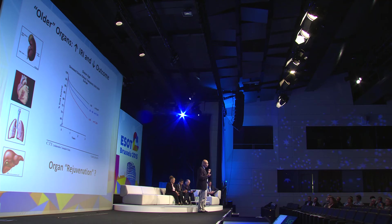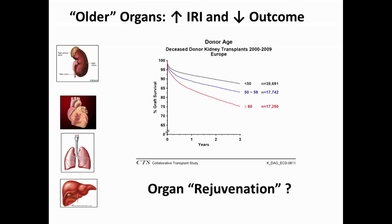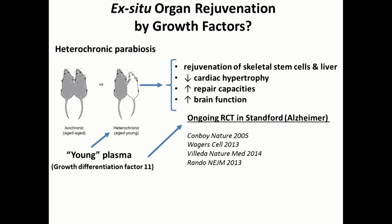For the last minute: all organs are more susceptible to ischemia-reperfusion injury and to a poor outcome with advancing age, and this is true for all organs. Can we do something about that? Can we rejuvenate organs?